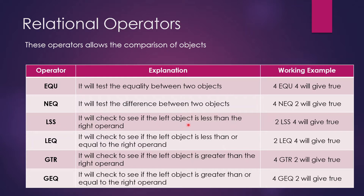In LSS, it checks if the left object is less than the right operand — 2 is less than 4, so it gives true. In LEQ, it checks if the left object is less than or equal to the right operand — 2 is less than 4, so true. In GTR, it checks if the left object is greater than the right operand — 4 is greater, so true. In GEQ, it checks if the left object is greater than or equal to the right operand — 4 is greater than 2, so true. That is how we use relational operators.